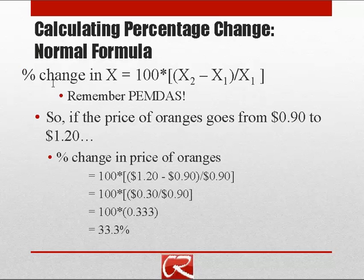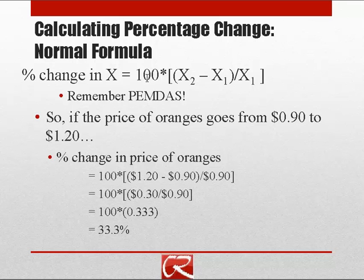To review, how do we normally calculate a percent change? We take the new value x2, subtract the old value x1, then divide all that by the old value x1, and multiply by 100 to convert a decimal into a percentage. So if we get 0.05 for the work inside the brackets, we multiply by 100 to get 5%.